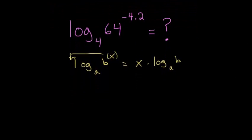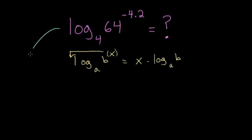So in our case, we can take that minus 4.2 and move it to the front. So minus 4.2 multiplied by log base 4 of 64 is what our expression changes to.